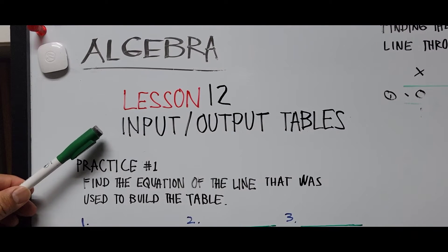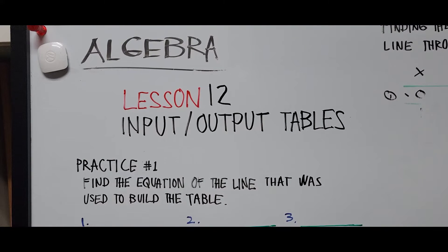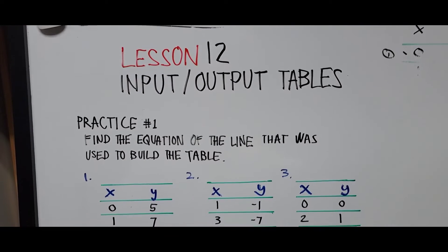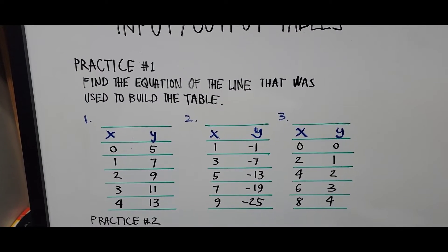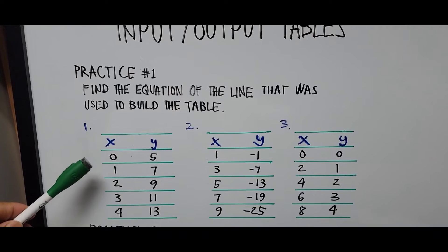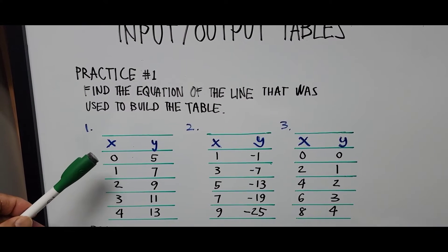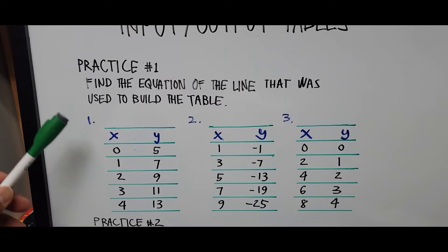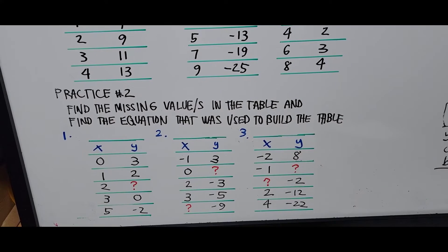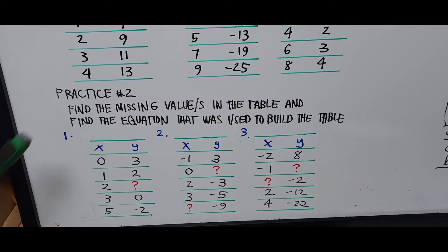On lesson 12, input and output tables, we have practice number one and practice number two. Practice number one: find the equation of the line that was used to build the table. We have three tables over here — number one, number two, and number three. All you have to do is find the equation of the line that was used to build each table.